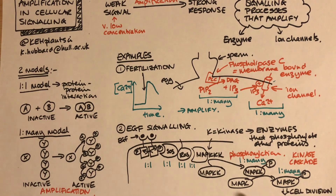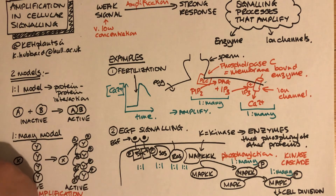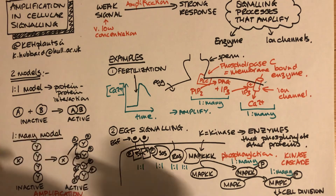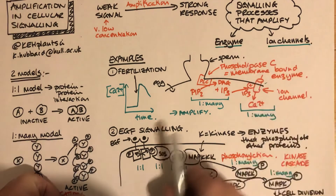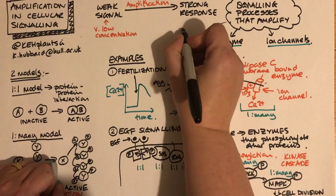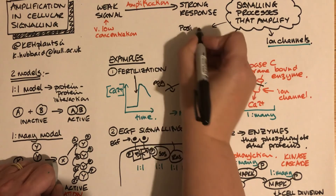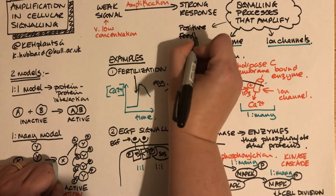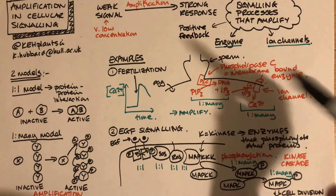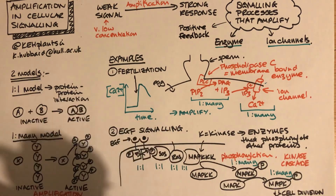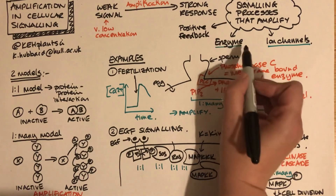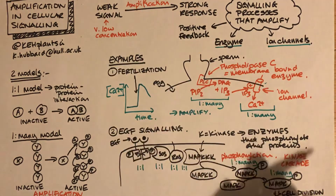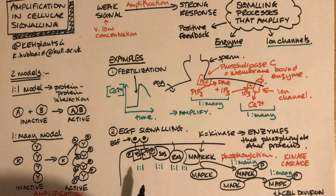When analyzing signaling pathways and thinking about amplification, most pathways have an amplification step. The things to look for are enzymes and ion channels. You can also have positive feedback, where a later stage of a process activates an earlier stage, which can also produce amplification. In terms of specific proteins, if you see an enzyme — phospholipase C, adenylate cyclase, or a kinase — it will amplify. And if there's an ion channel, it will definitely amplify your signal.